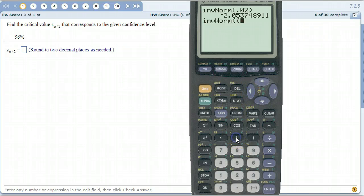let's put it in parentheses. 1 minus, change this to a decimal, so 0.96. Close that off and then divide it by 2.